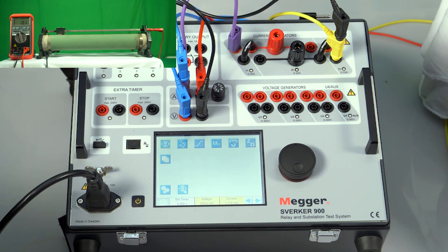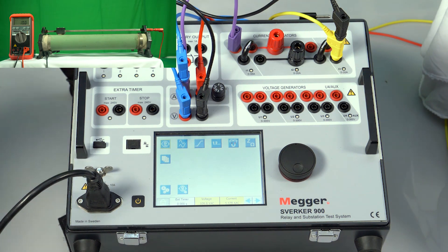Now let us connect the current generators in series so that the compliance voltage would get added and we will be able to get a very high burden. Let us connect to 20 ohms resistance and inject approximately 5.5 amps.